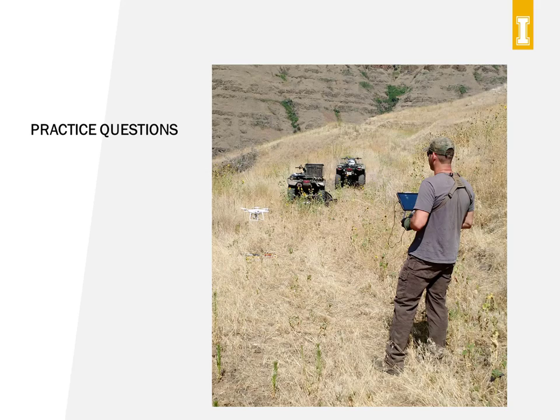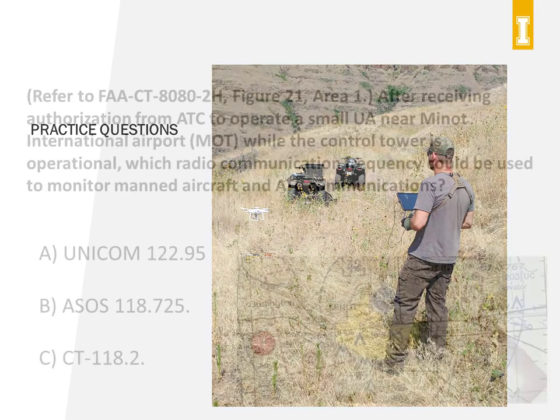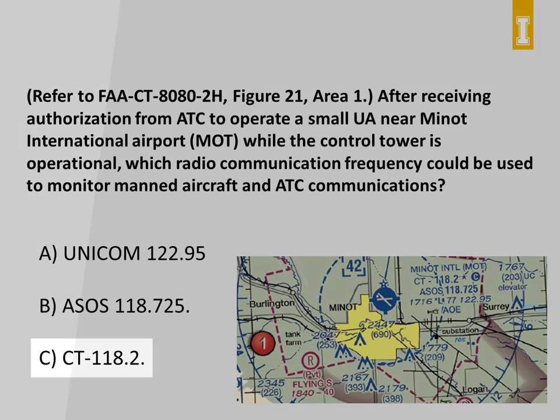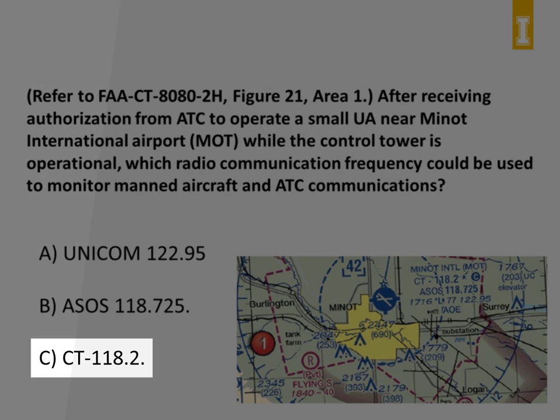Let's look at a couple of practice questions you're likely to see on the test. The first question refers to testing supplement figure 21, area 1: 'After receiving authorization from air traffic control to operate a small UAS near Minot International Airport while the control tower is operational, which radio communications frequency should be used to monitor manned aircraft and air traffic communications?' The answer is C, because 118.2 megahertz is the control tower frequency for the Minot airport and it's the frequency listed as the CTAF.